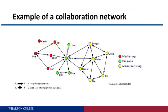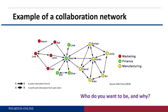Back to the example of a collaboration network from the previous segment. There are 15 people in this new product development team, in three different parts of the organization, working together and often seeking information from each other to get their work done. I want you to think about this question: just looking at this network, who do you think you might want to be, and why? Who do you think you might want to be in that network, and what would be your reasons?